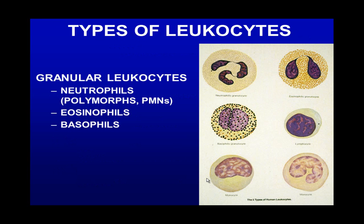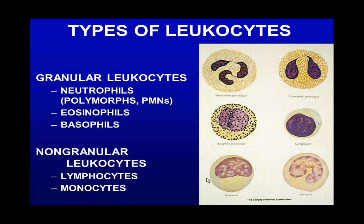There are different types of leukocytes. You have the granular leukocytes, which are the neutrophils, eosinophils, and basophils, and the non-granular ones — the lymphocytes and monocytes. Today we're going to work with just the neutrophils.